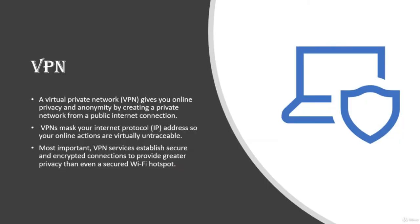VPN: A VPN is a Virtual Private Network which gives you online privacy and anonymity by creating a private network from a public internet connection. VPN masks your IP address so your online actions are virtually untraceable. Most important VPN services establish a secure encrypted connection, providing greater privacy than even a secured Wi-Fi hotspot.